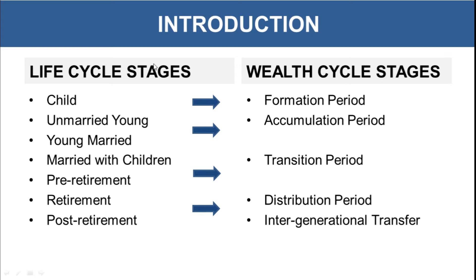Here you can see two terms: life cycle stages and wealth cycle stages. Both of these stages come into concern when we talk about financial planning. When we are doing financial planning, we need to analyze which life cycle stage a particular individual is in and how that life cycle stage is correlated to a particular wealth cycle stage. Life cycle stages include child, unmarried young, young married, married with children, pre-retirement, retirement, and post-retirement.